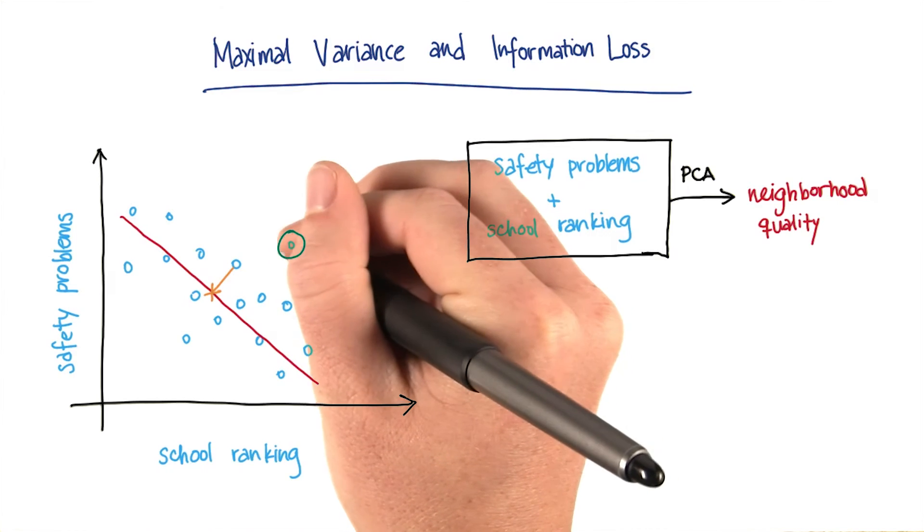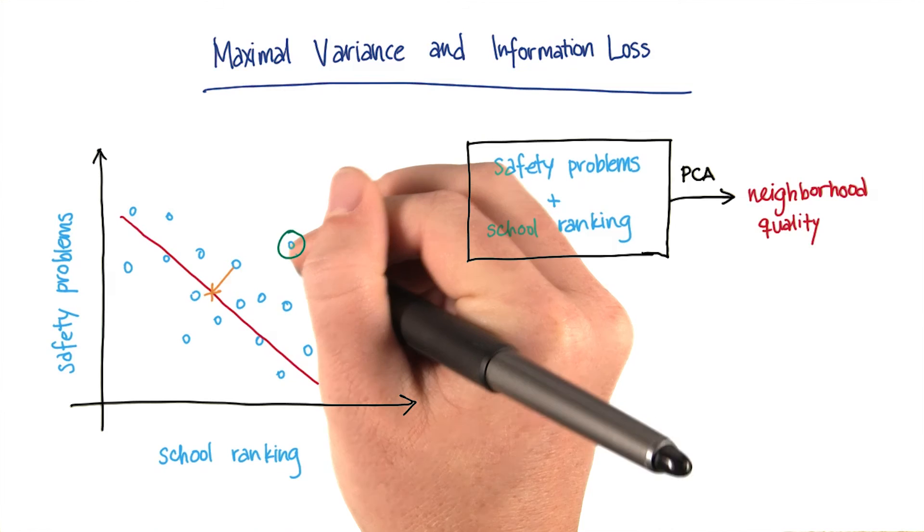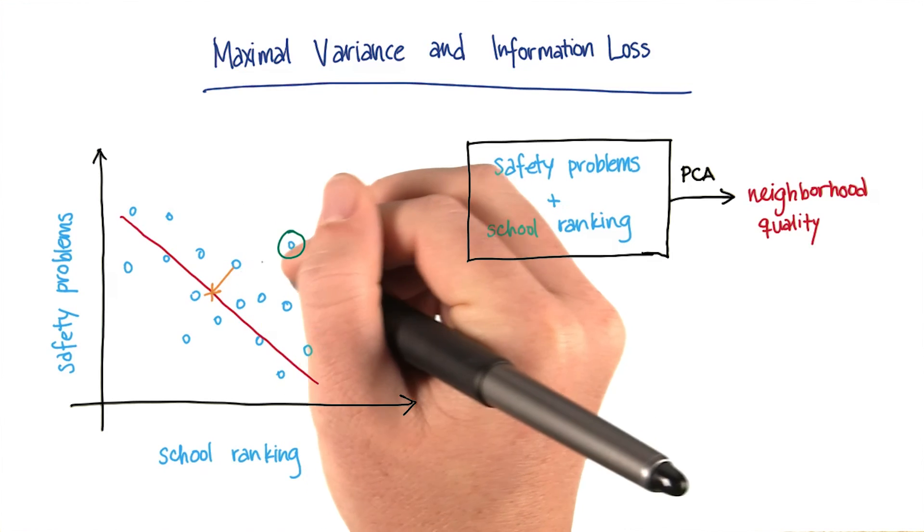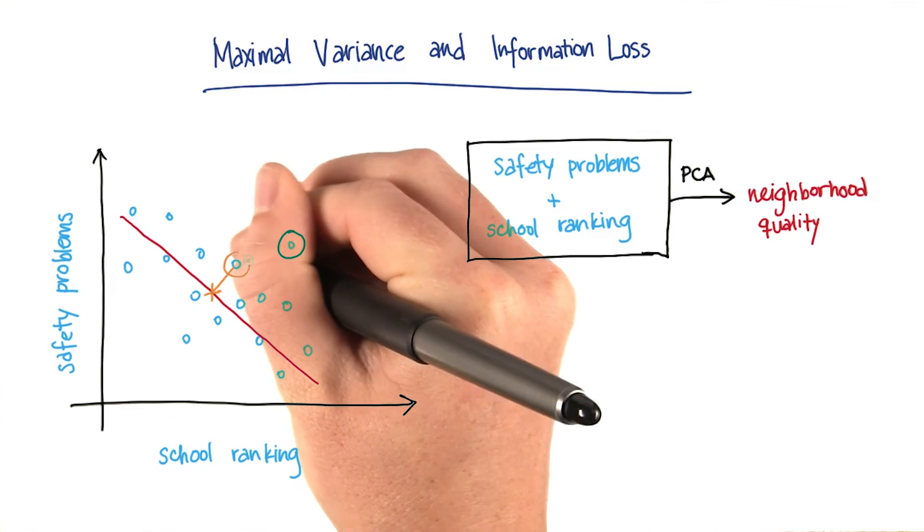So my question for you is: how much information are we going to be losing when we perform that projection of this point? Is it going to be more, less, or about equal to the amount of information that's lost on our original point, the example I just showed you?